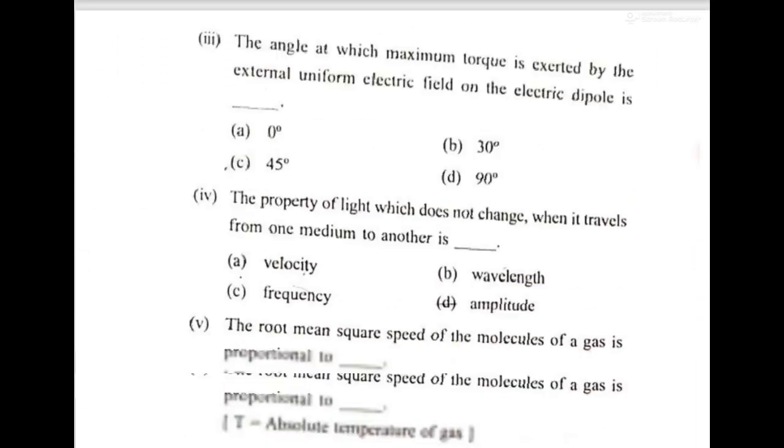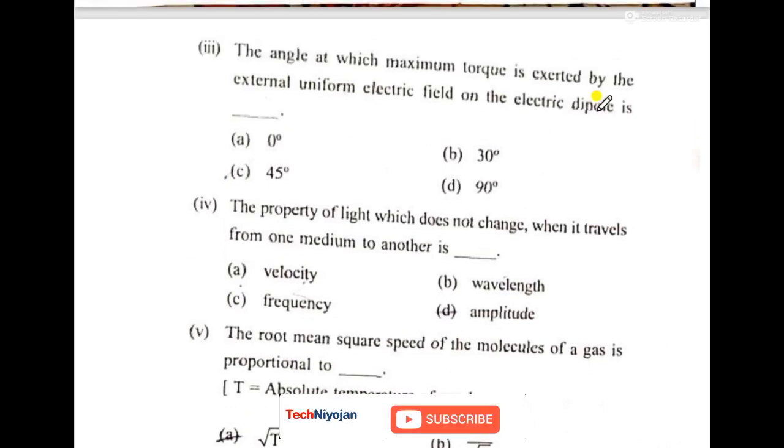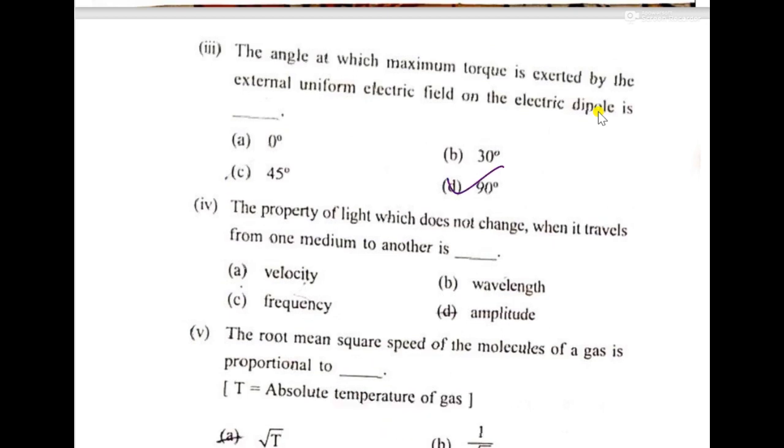Then we'll move forward the third one. The angle at which maximum torque is exerted by the external uniform electric field on the electric dipole is 90 degrees. The property of light which does not change when it travels from one medium to another is its frequency.